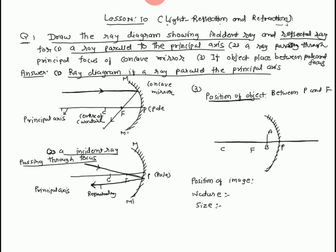Now we solve the third question. Position of object: if the object lies between pole P and focus F. As per diagram, MM' is a concave mirror. If the object is placed — ray number 1: the ray parallel to the principal axis, it is compulsory passing through the focus. Now ray number 2: a ray passing through the center of curvature returns back in the same direction.